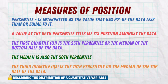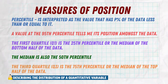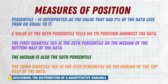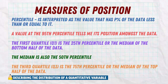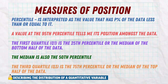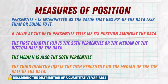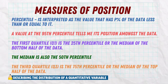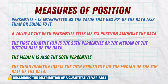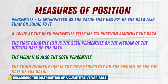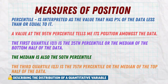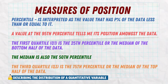We also have the first quartile (Q1), known as the 25th percentile — think of it as the middle of the bottom half of your data, with 25% of data below it and 75% above. The median is known as the 50th percentile because 50% of data is below it and 50% is above. The third quartile (Q3), also known as the 75th percentile, has 75% of data below it and 25% above.